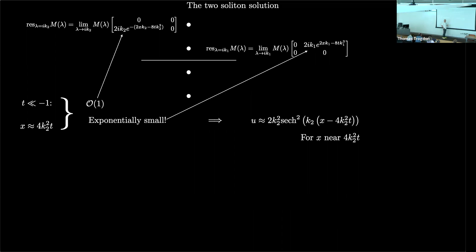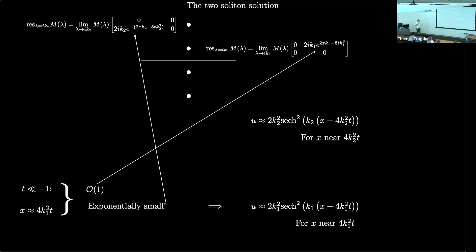If I then choose X near the center of the other peak — still at very large negative T — things reverse. The entry at iκ₂ is small and the other is order one. Ignoring the small one, you find again a sech profile, but centered at X equals 4κ₁²T as opposed to 4κ₂²T. So that's the analysis.